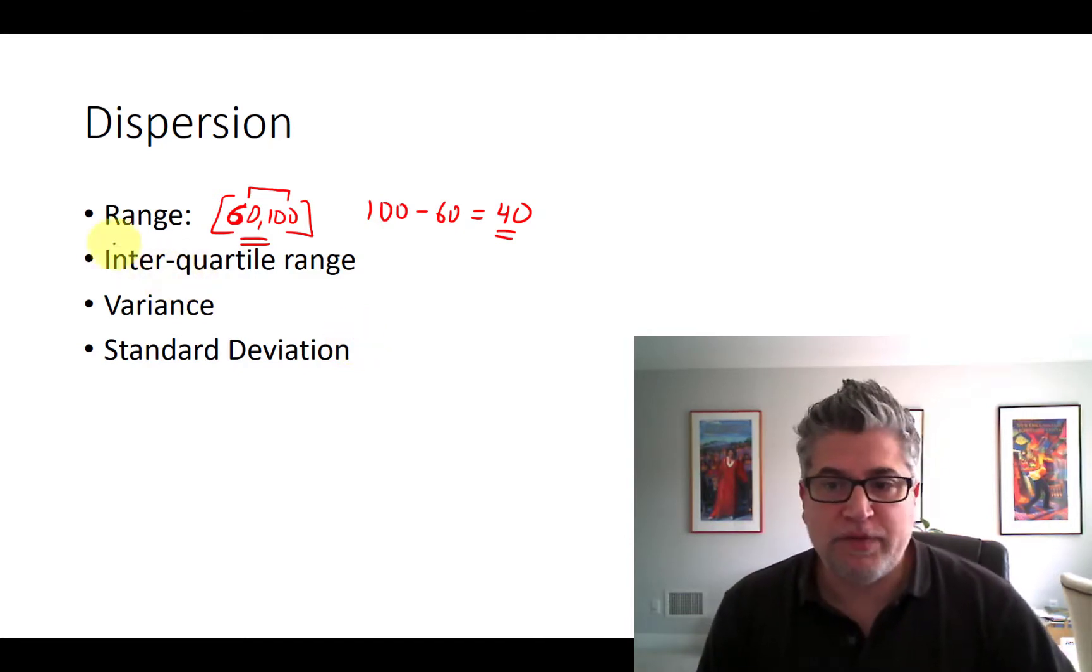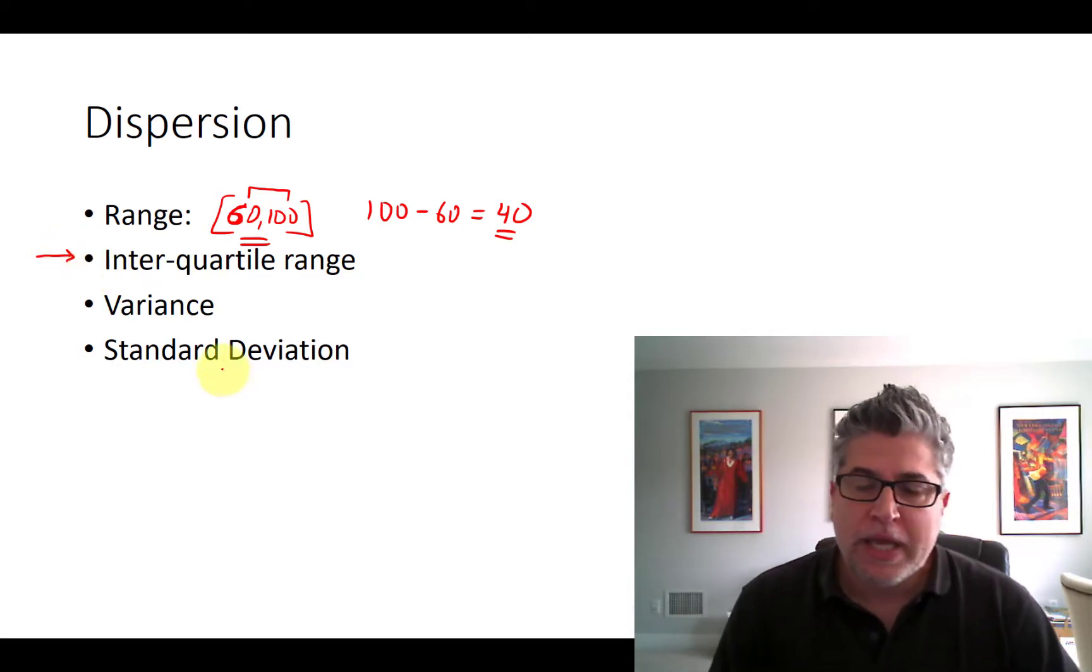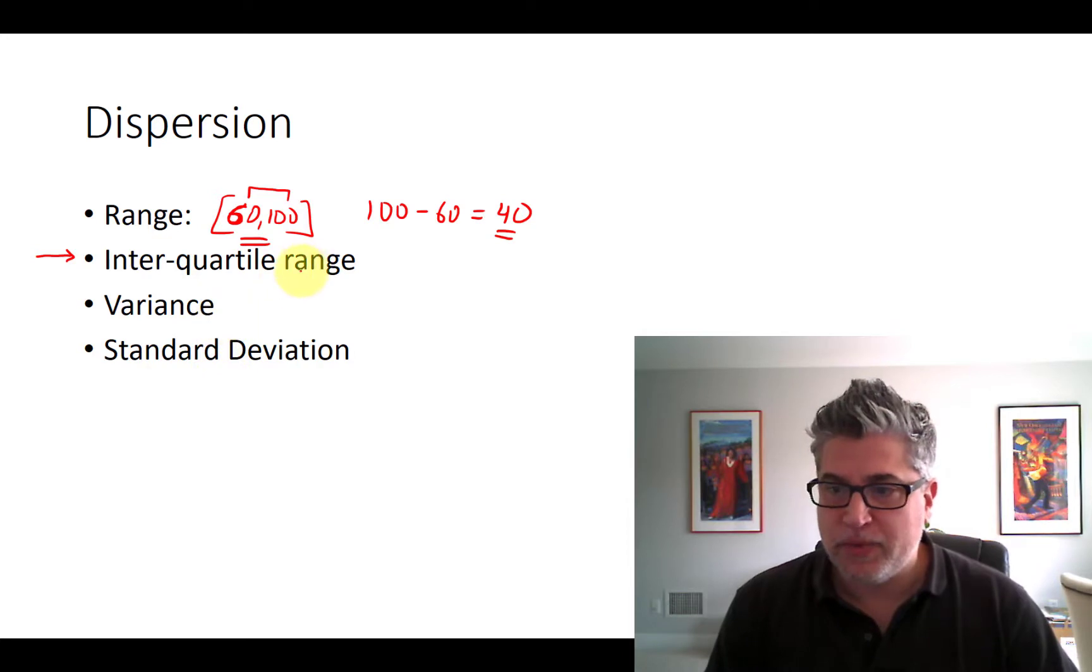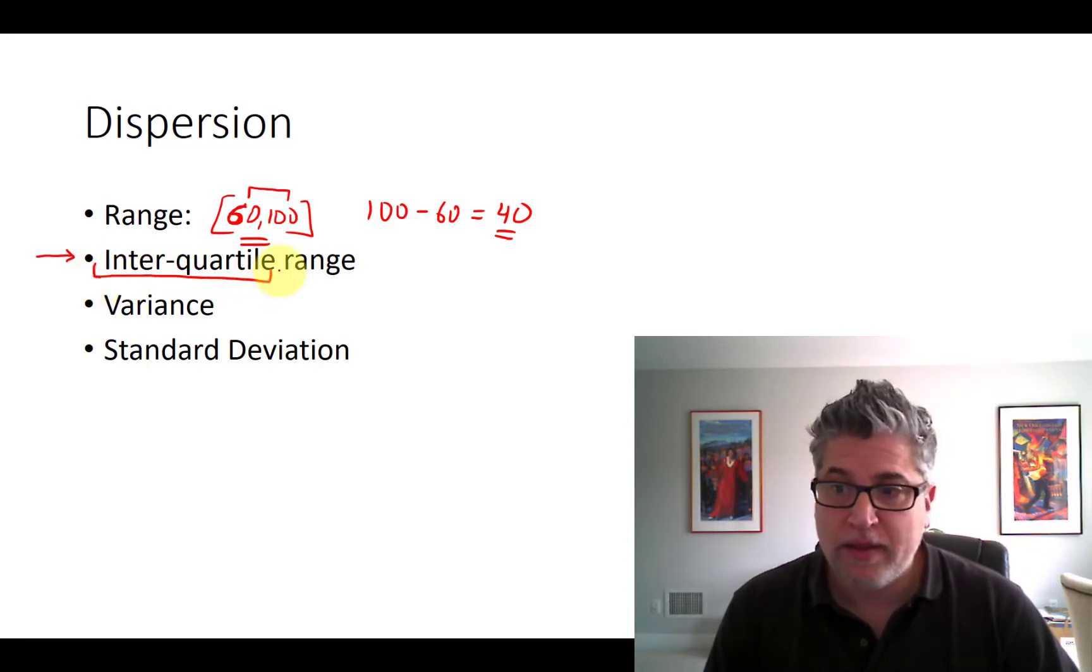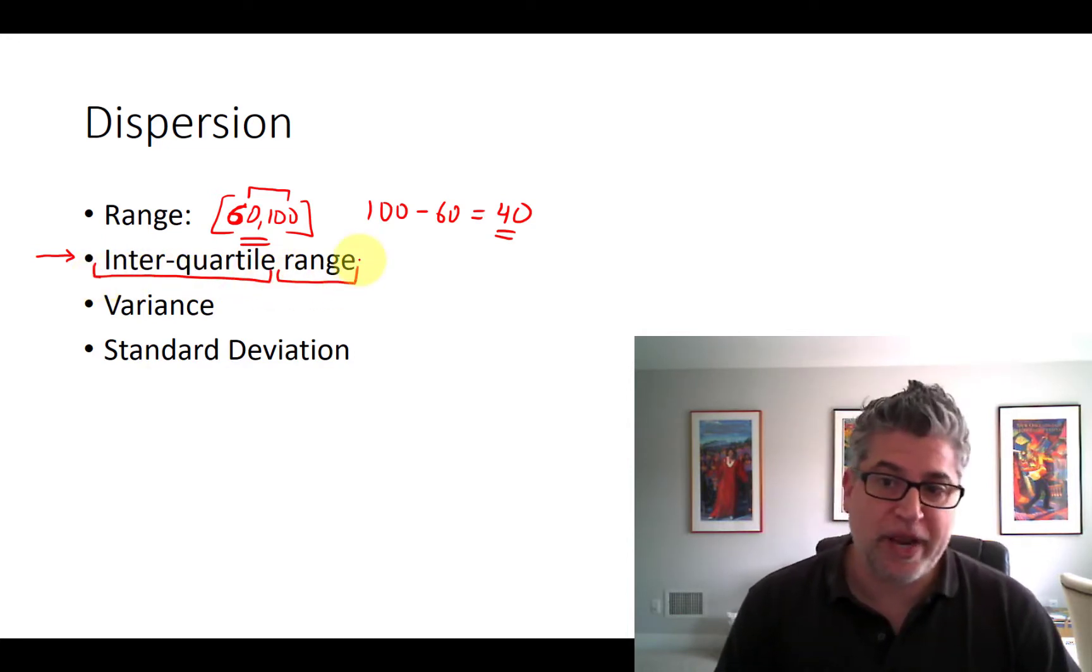Another common measure of dispersion is something called the interquartile range. Explaining this one is going to take a little bit more time because we need to marry two different concepts. We need to marry the idea of what a quartile is and then marry that with the idea of a range.